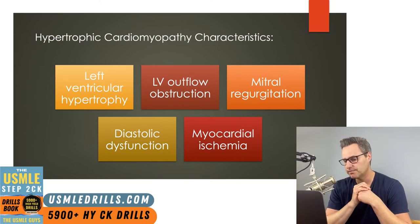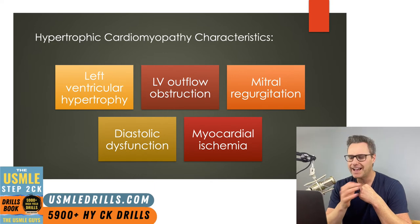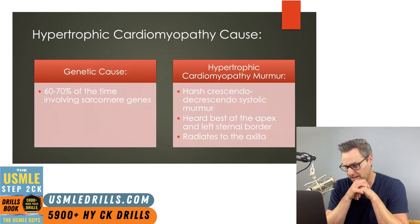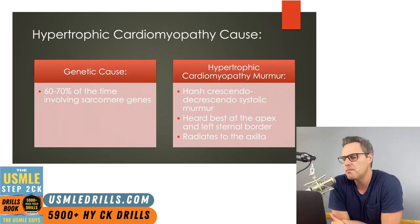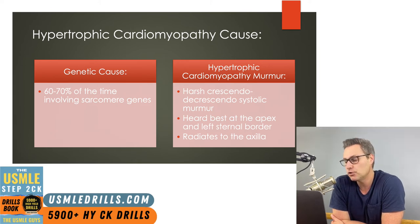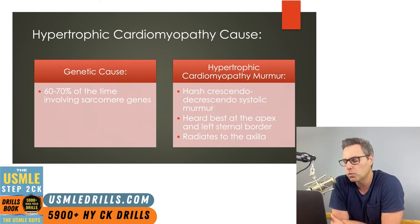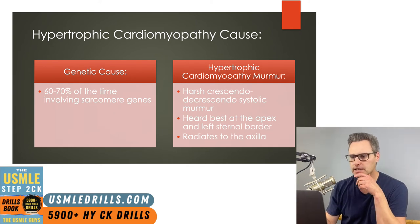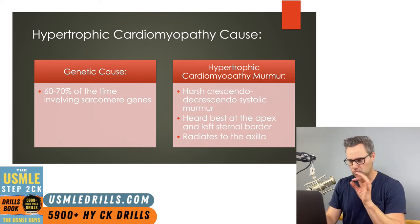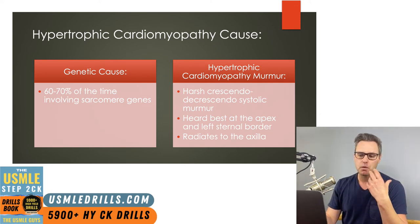Diastolic dysfunction is often present as a result of myocardial hypertrophy that inhibits filling. The cause of hypertrophic cardiomyopathy is genetic mutations the vast majority of the time, involving genes affecting sarcomeres specifically. The murmur associated with hypertrophic cardiomyopathy is a crescendo-decrescendo murmur heard best at the apex and left sternal border with radiation to the axilla.